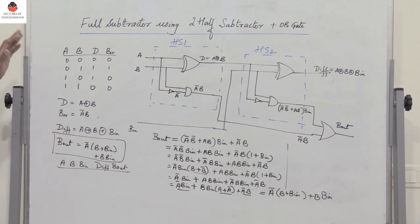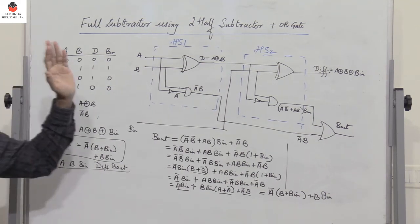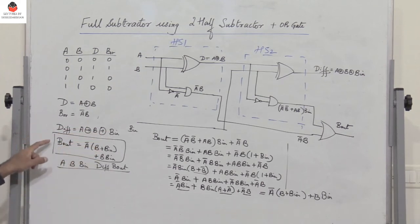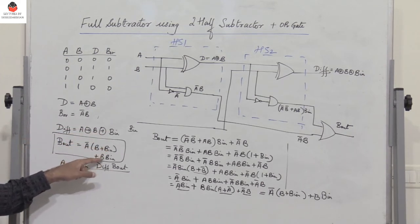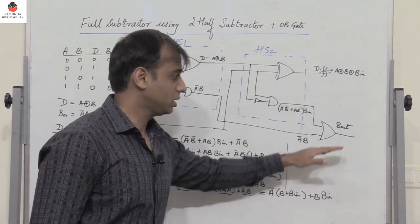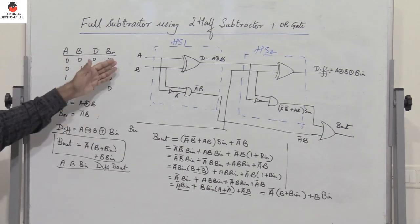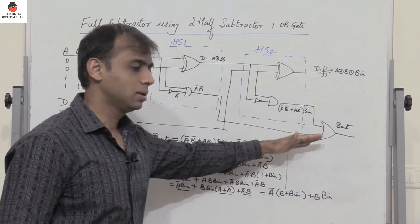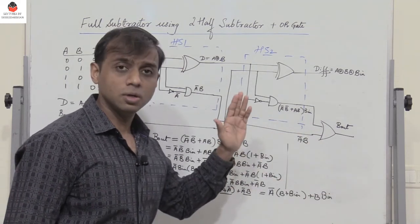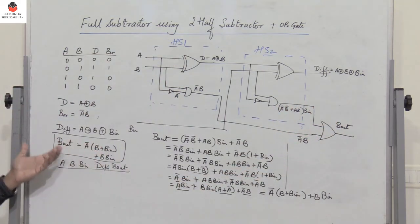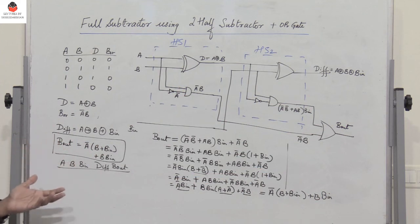If I simplify the truth table of a full subtractor using a three-variable K-map, for difference I get A XOR B XOR B_in, and for borrow out I get A̅(B + B_in) + BB_in. This is exactly what I have obtained here. Therefore, a full subtractor can be implemented using two half subtractors with an additional OR gate, and the borrow out matches the K-map simplified expression.